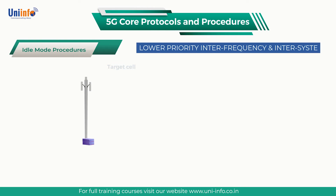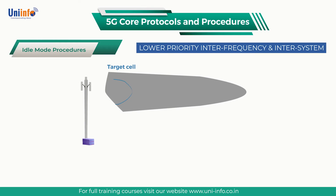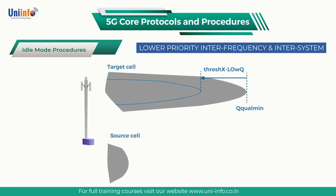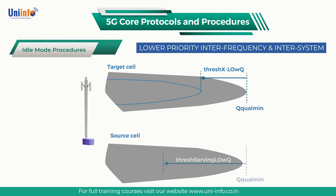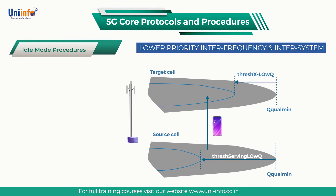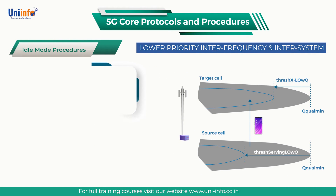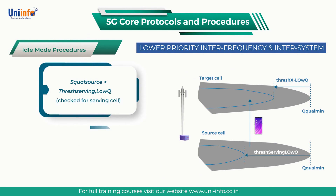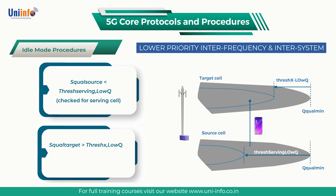Lower priority inter-frequency and inter-system cell reselection towards a lower priority layer can be based upon either RSRP measurements or RSRQ measurements. If threshold serving low quality is broadcast by SIB2, then the procedure is based upon RSRQ measurements. In that case, the UE moves to the lower priority layer if both of the following conditions are satisfied.